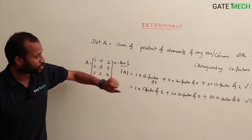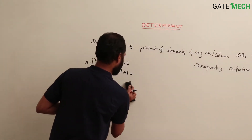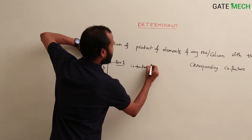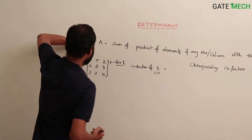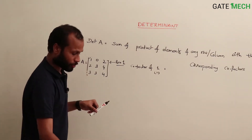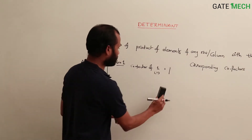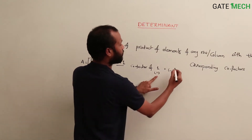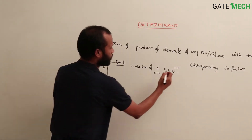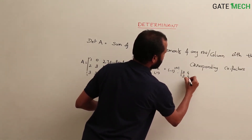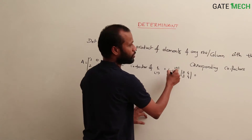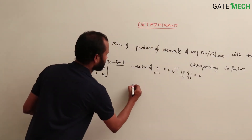Let us find the cofactor of element 1 at position (1,1). You hide the corresponding row and column; the remaining submatrix is |3 4; 3 4|. The cofactor is (−1)^(1+1) times det(3 4; 3 4). That is (+1) into (3·4 − 3·4) = (+1) into 0 = 0.